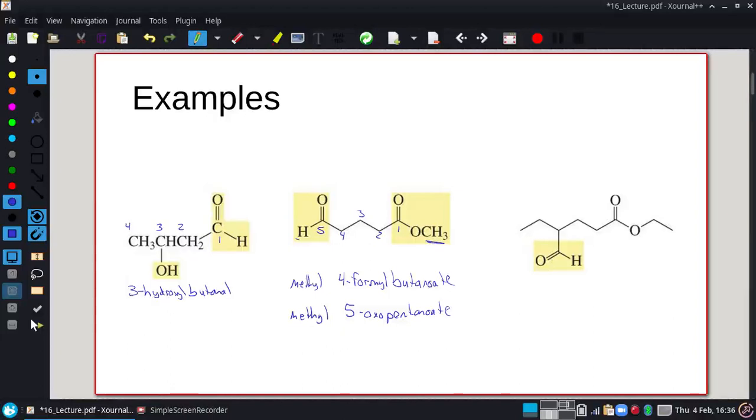All right. Now, theoretically, this other one could be an oxo as well, but we're much better off to actually have that part of our backbone or not part of our backbone because our backbone is longer. So this one, I'm definitely going to use that formal group. So I have an ethyl out front. And then on the fourth location, we have a formal group. And then hexanoate.